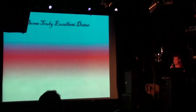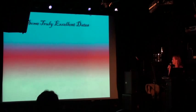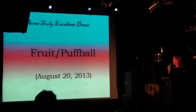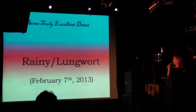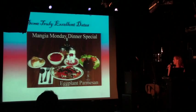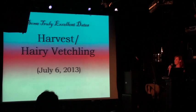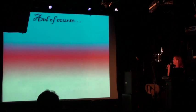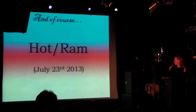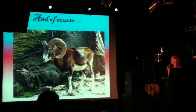I also just wanted to include some other days that I really like: foggy turkey — that's going to happen on November 5th of this year — fruit puffball, that's August 20th, flower carp, rainy lungwort, foggy endive, great harvest eggplant — I thought this picture really summed that up — harvest hairy vetchling, just if you're wondering that is what that is. And of course, everyone's favorite: hot round. That's coming up.